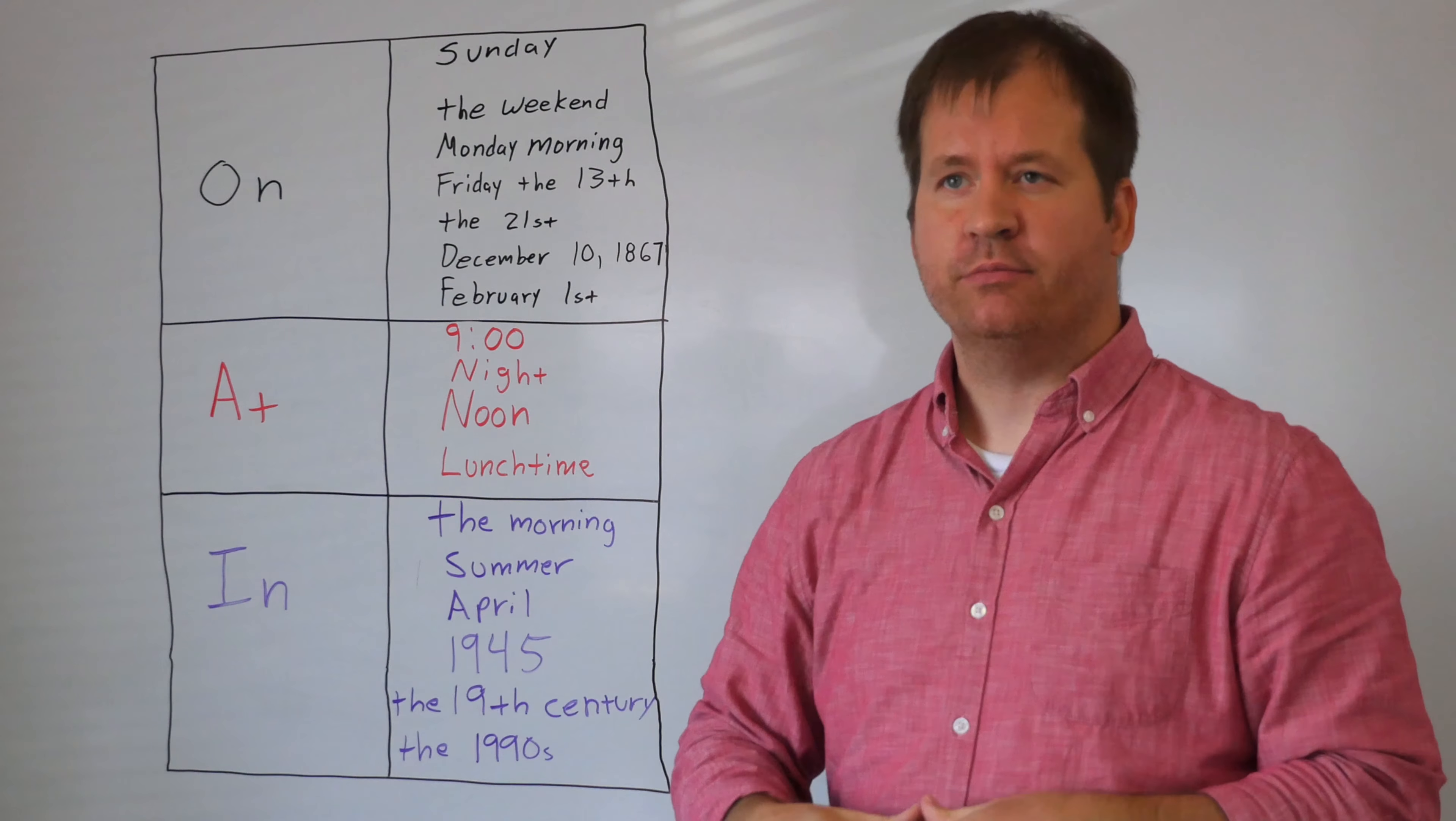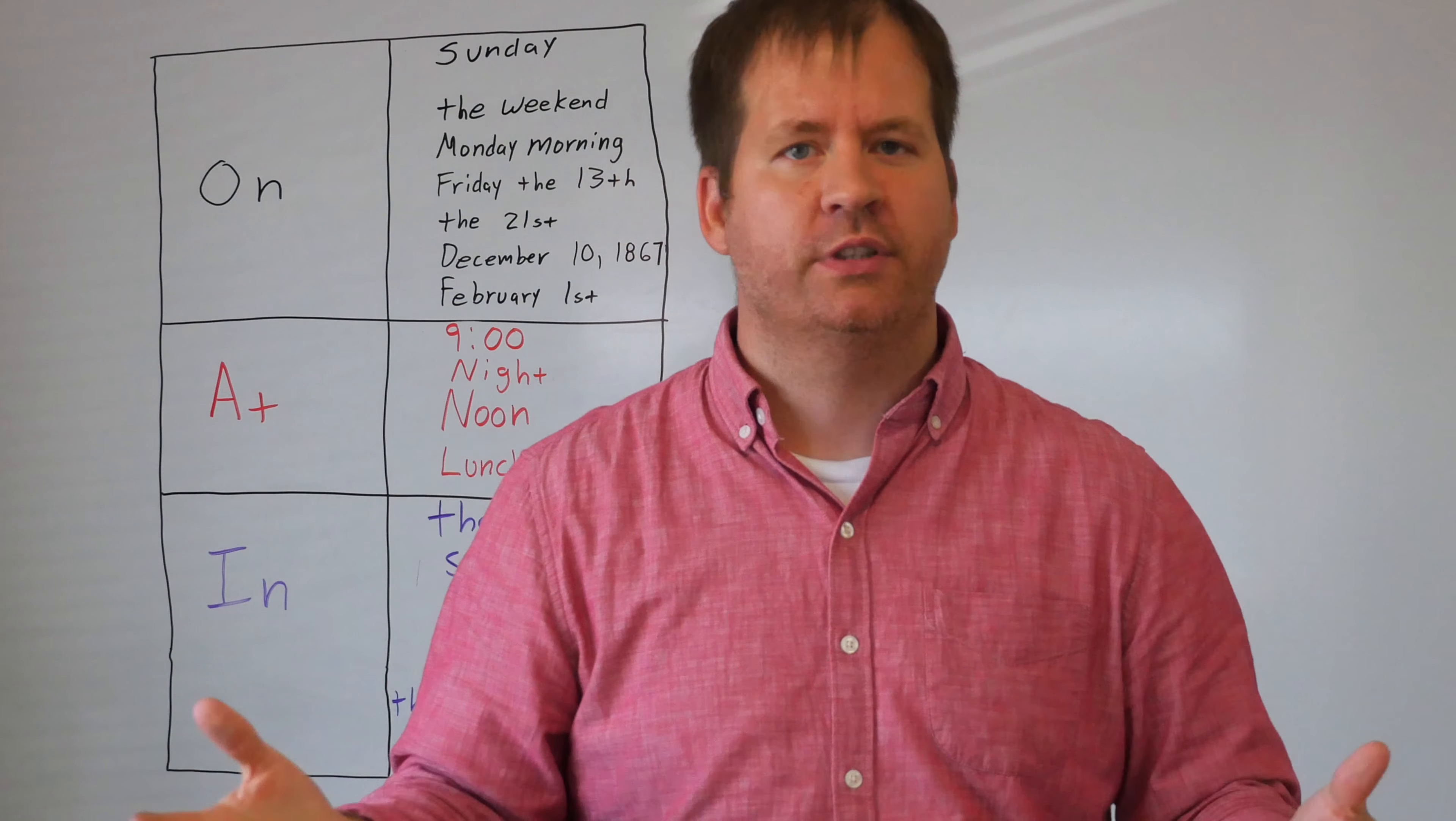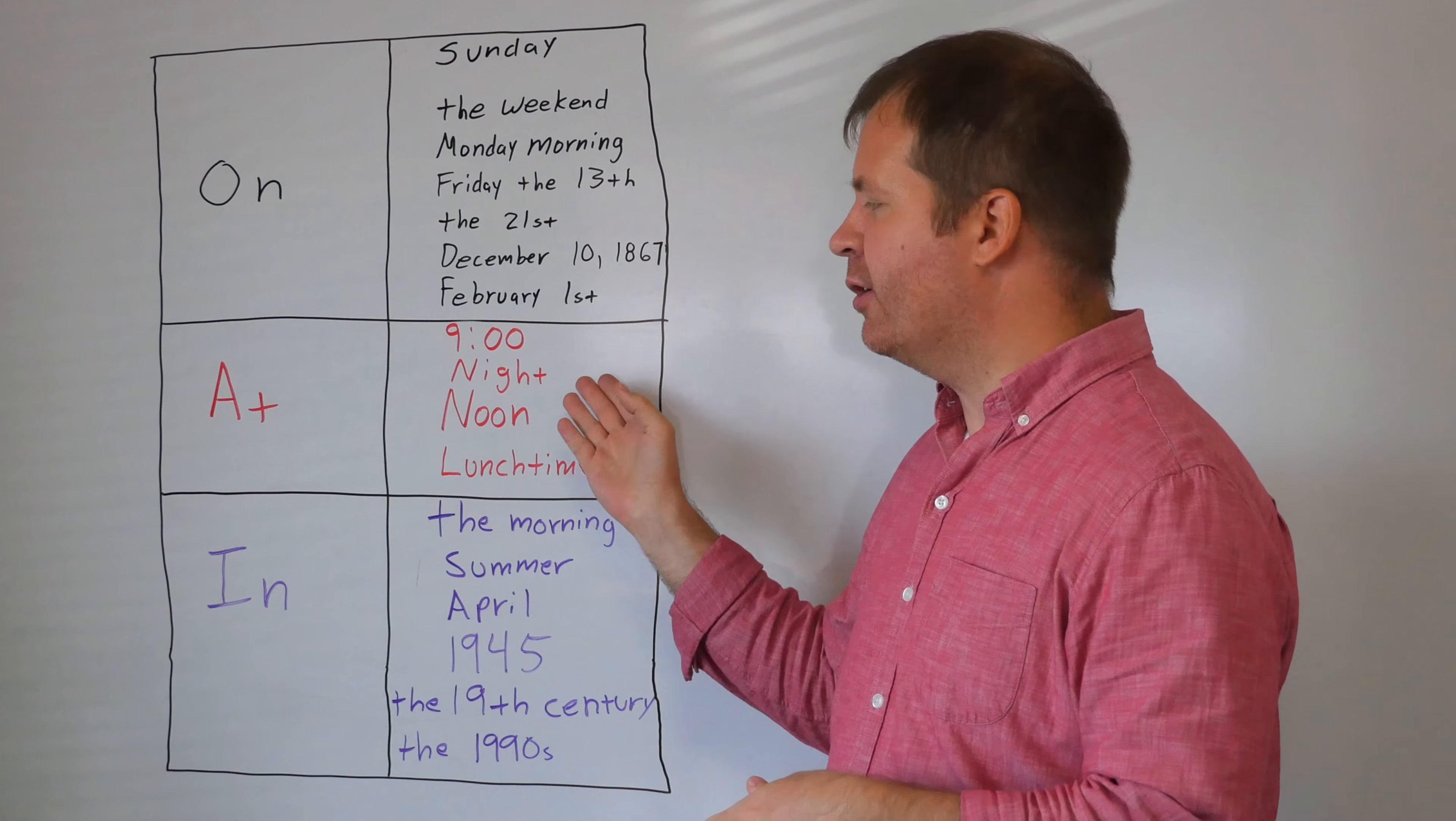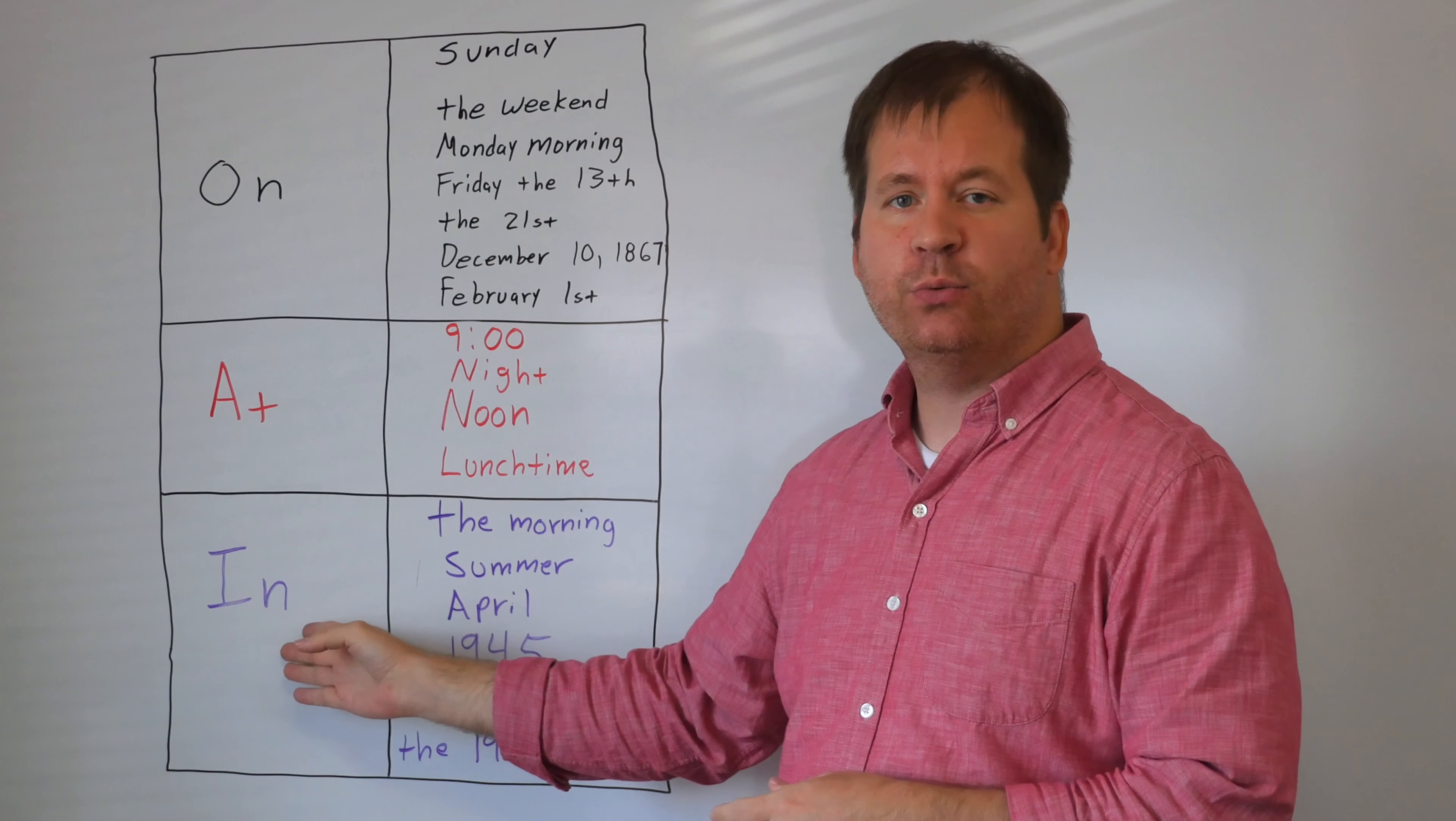And on a specific date, on December 10th, 1867, one of my favorite samurai, Sakamoto Ryoma, was killed. On a specific date. On February 1st. Again, it's a date, February 1st. So this is when we would use on, the preposition on, to discuss certain days of the week or portions of the week.